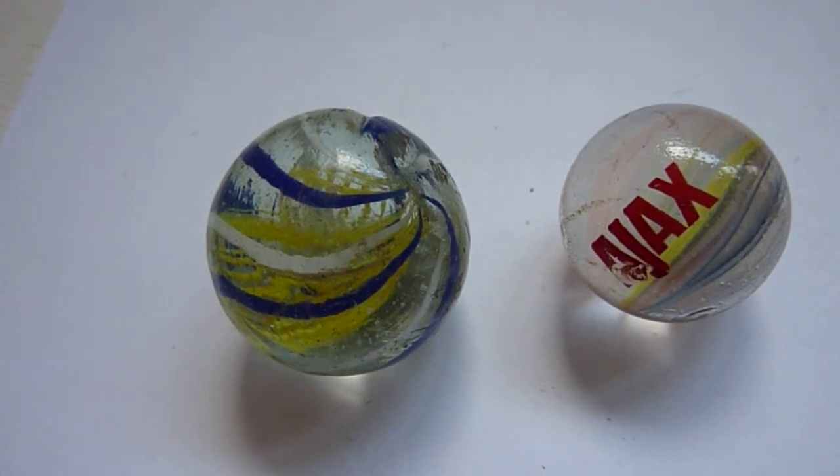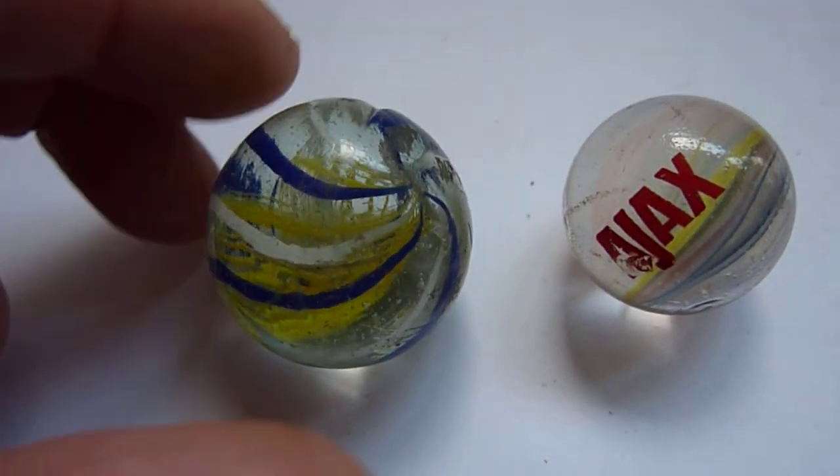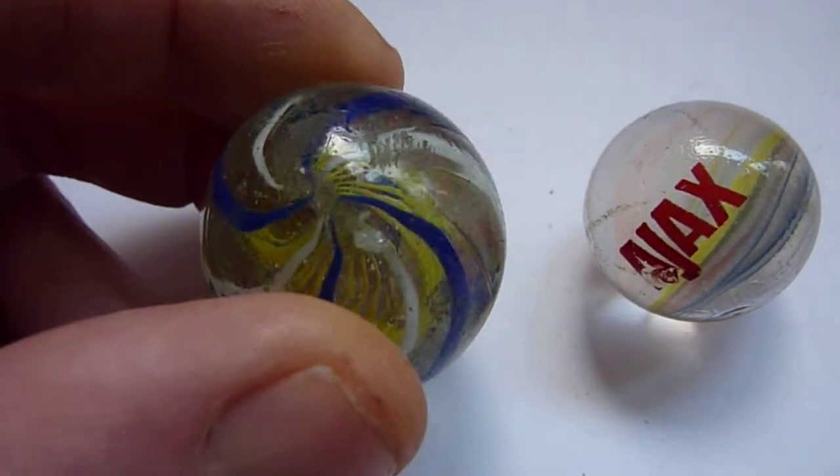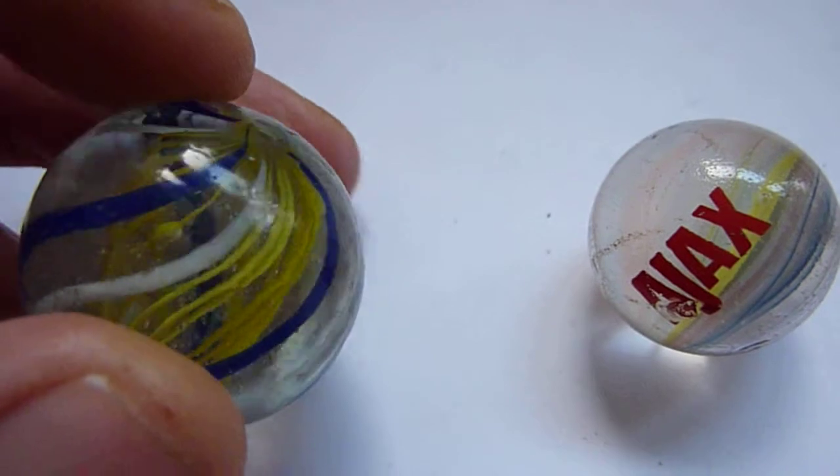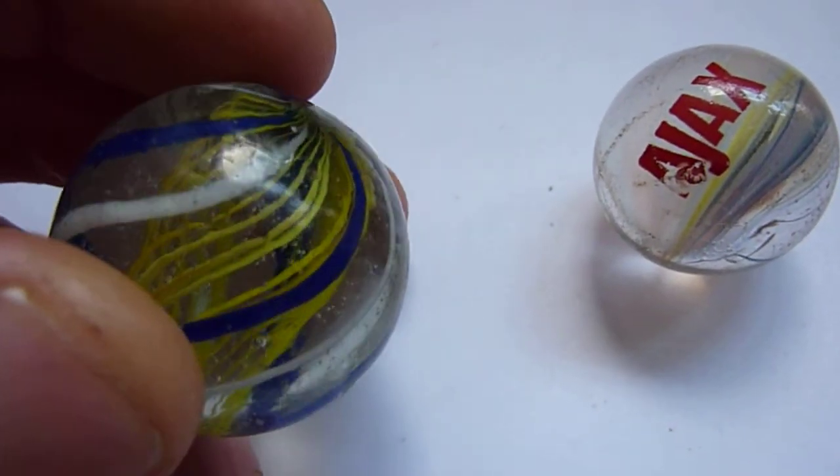I'm just taking a short video of these two marbles as I know condition is important. This is a large Victorian hand-blown swirl marble, probably around the 1900 era.